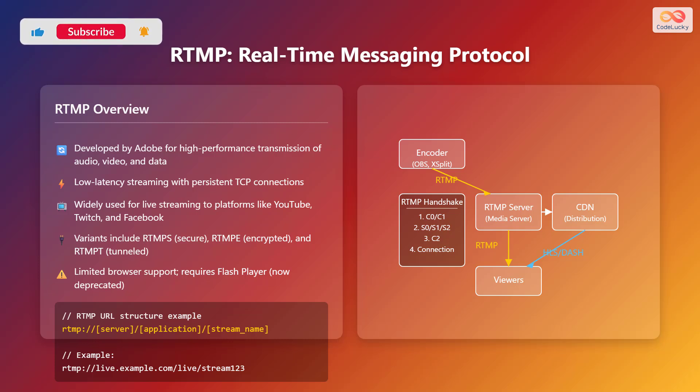Looking at the diagram, you can see a typical RTMP architecture. The encoder, such as Open Broadcaster Software or XSplit, sends the stream to an RTMP server, which then distributes it either directly to viewers or through a content delivery network. The diagram also illustrates the RTMP handshake process, which involves steps C0, C1, S0, S1, S2, and C2 to establish a connection.